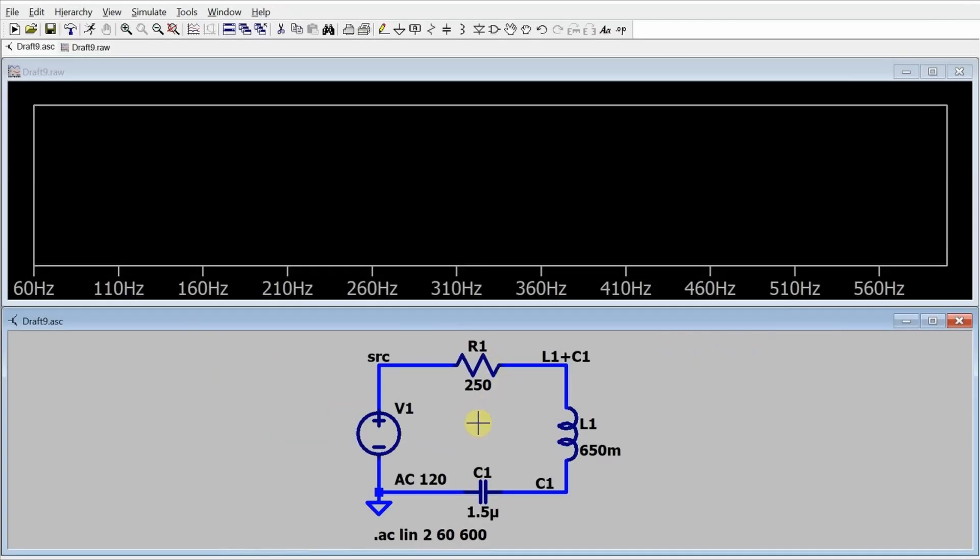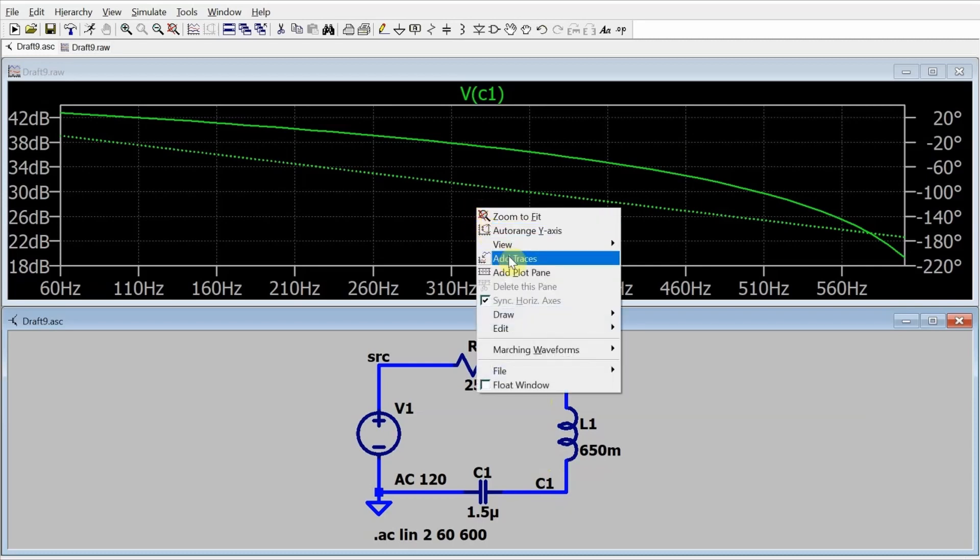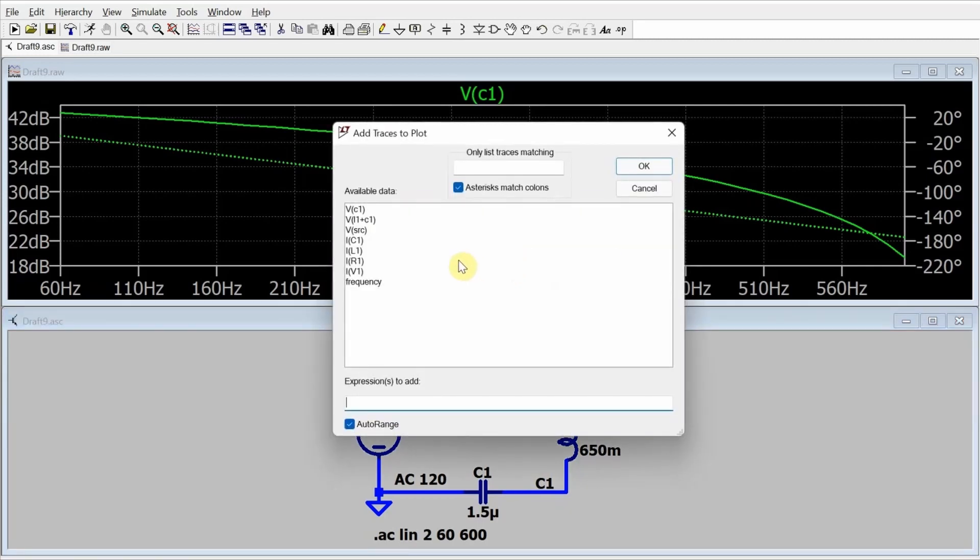Now I simulate and I can start adding traces to this Bode plot. The only voltage that's measured with respect to ground is this voltage across C1. So I'm going to add that one first. And then I'm going to go up to the Bode plot and I'm going to add traces. And here's where I can add traces based on math. So if I go this L1 plus C1 minus the voltage across C1, that's the voltage across the inductor.